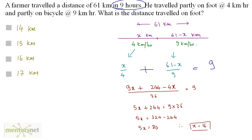Solving this equation gives the value of x as 16. So 16 kilometers is the distance travelled on foot. Option C is the correct answer.